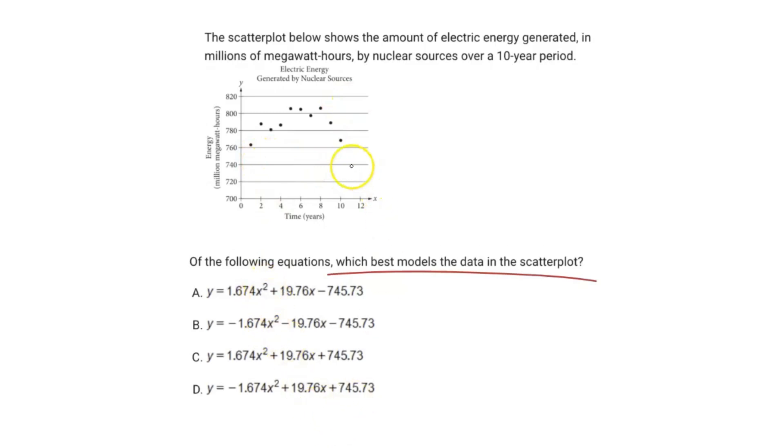We know that quadratics—the parabola either opens upwards or downwards. If the parabola opens up like a U, that means the coefficient in front of the x² term is going to be positive.